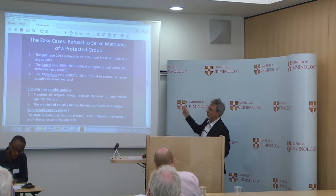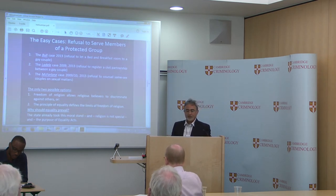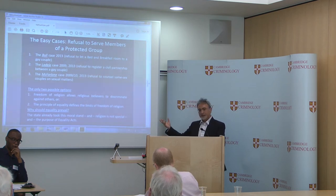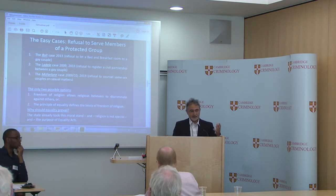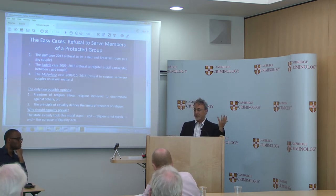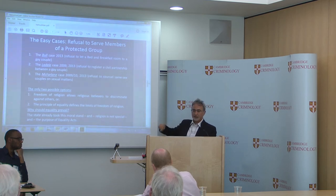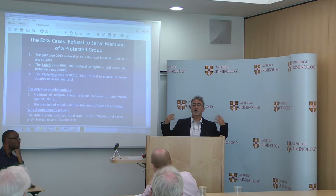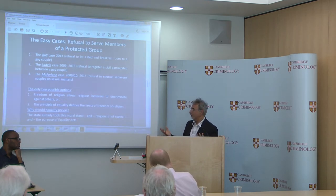Equality must prevail not because I think that equality is more important — I do, but this is beside the point. It must prevail because the state already took this stand when it enacted the equality law, and also because religion is not special. The purpose of equality acts — we have equality laws and we have the Equality Act — not because the state wanted to prevent gay-friendly liberals from discriminating against gay people. The state took a moral stand by enacting the Equality Act according to which equality matters and equality defines the limit of freedom of religion. If we exempt religious objectors from the application of the law, we will have to exempt each and every conscientious homophobic objector, unless we think that religion is special — and a liberal democracy can't think that. And if we exempt all conscientious homophobic objectors from the application of the law, then why do we have the law to begin with?